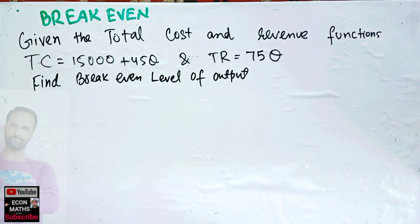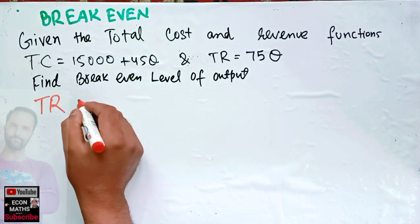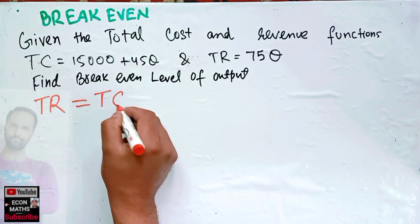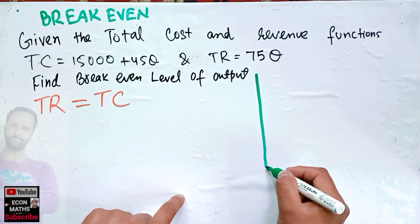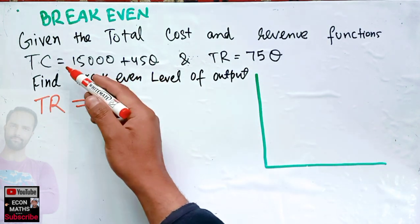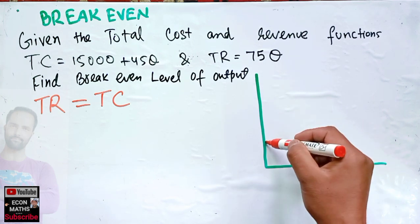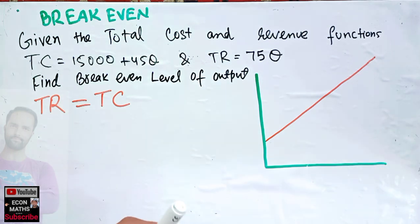What is break-even level of output? It is a level of output where total revenue matches total cost. Graphically, let's draw this. This is our total cost function and our total revenue function is 75Q.